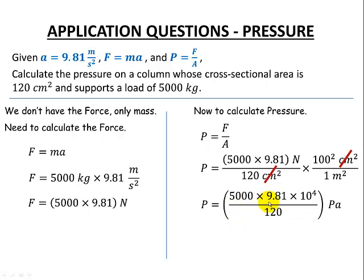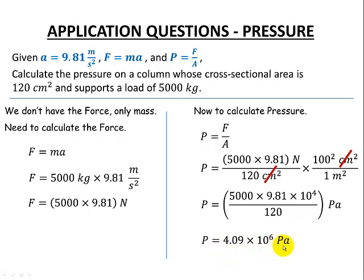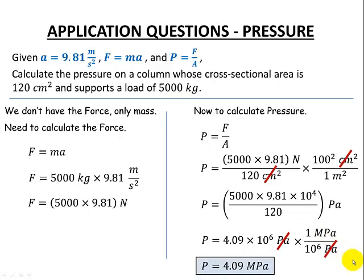So we have 5,000 × 9.81 in the numerator, and 100² (which is 10⁴) × 120 in the denominator — remembering this gives pascals, since newtons per meter squared are pascals. Our overall answer is a very large number: 4.09 × 10⁶ pascals. Converting to megapascals using the ratio of one million pascals per megapascal, the pascals cancel and our final answer is 4.09 megapascals.